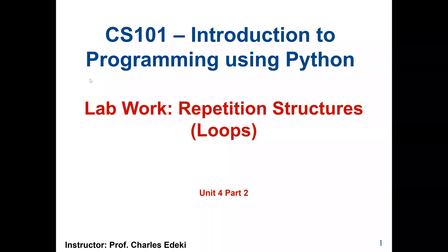Welcome to CS101, Introduction to Programming using Python. This lab work covers Chapter 4 of our course textbook. We are going to use the for loop or the while loop to solve two problems, which is the repetition control structures.